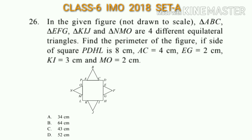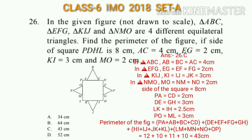EG = EF = FG = 2 cm; KI = IJ = JK = 3 cm; NM = NO = MO = 2 cm. The side of the square is 8 cm. PD = 8 cm and AC = 4 cm, so PA = CD = 2 cm. Similarly, DE = GH = 3 cm, LK = IH = 2.5 cm, PO = ML = 3 cm. The perimeter of the figure is 12 + 10 + 11 + 10 = 43 cm, so the answer is option C.